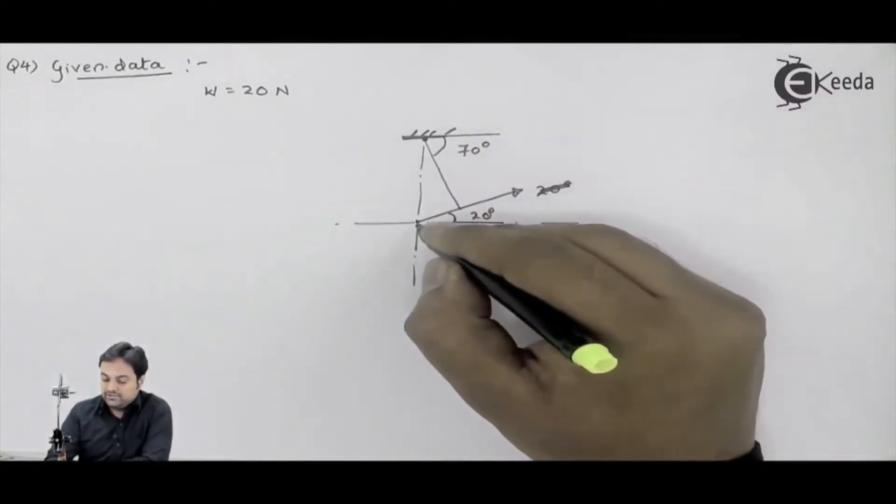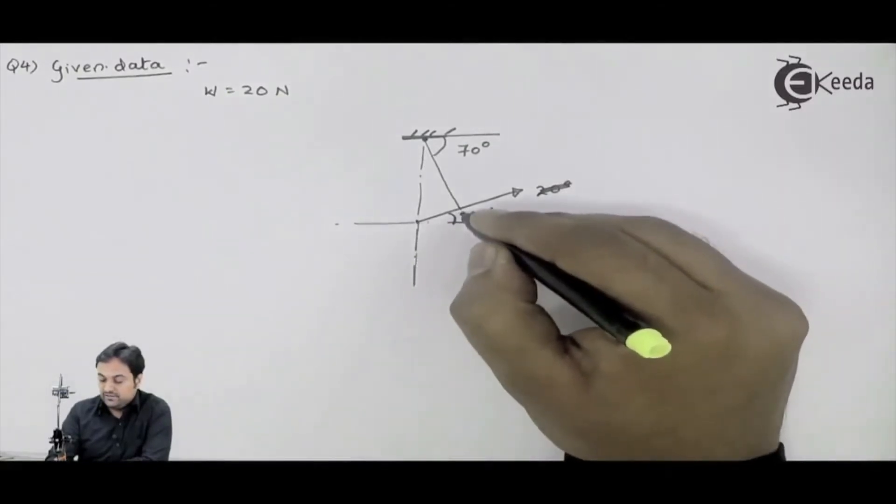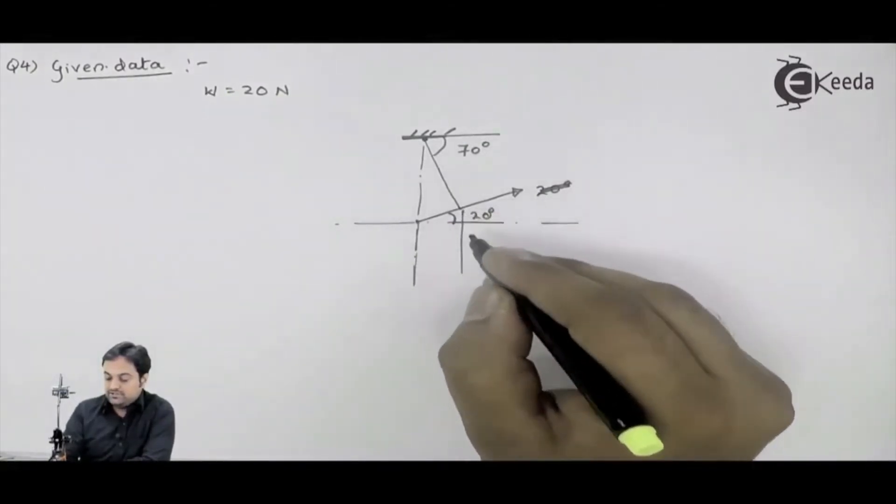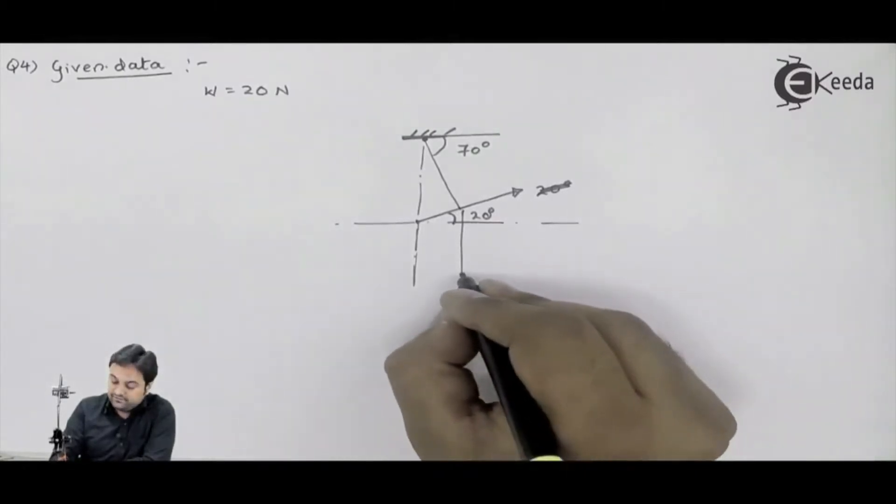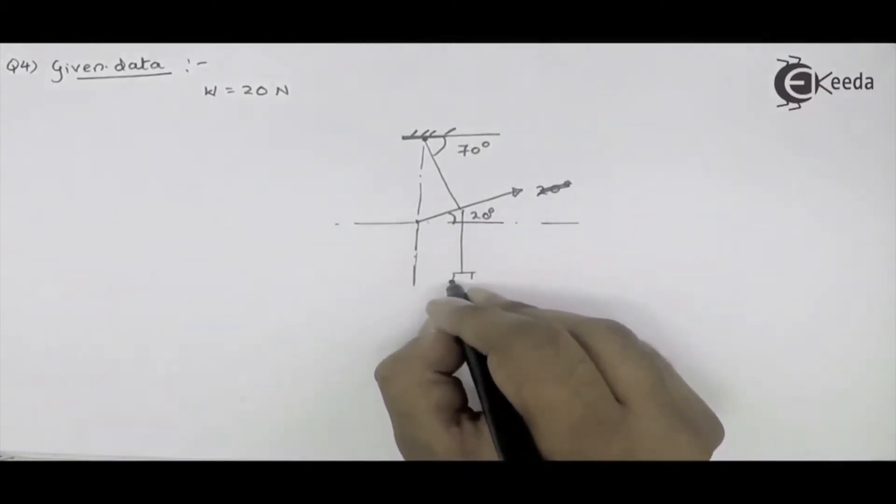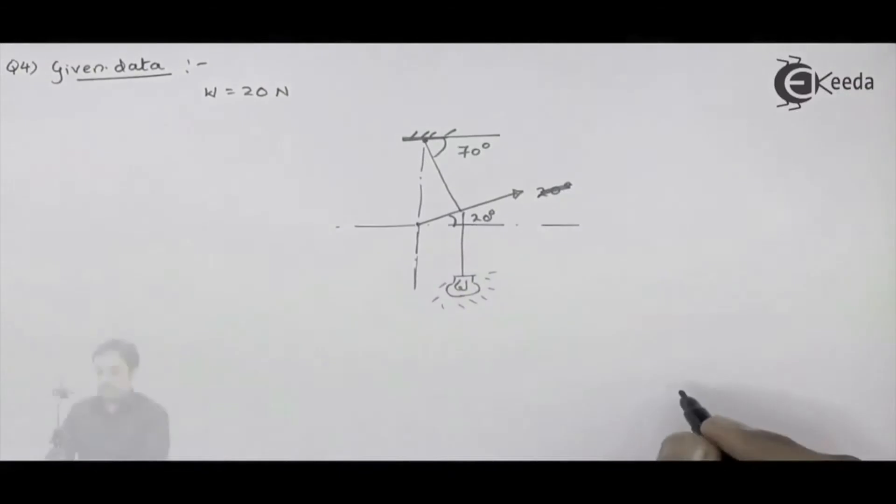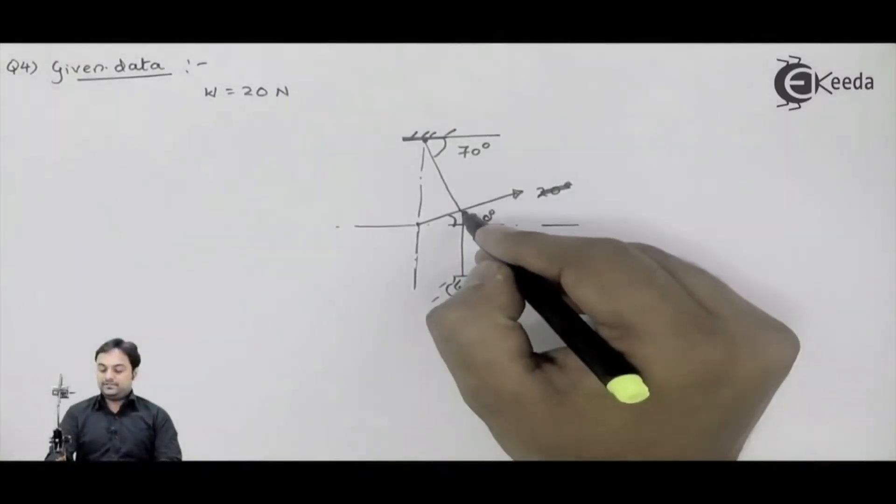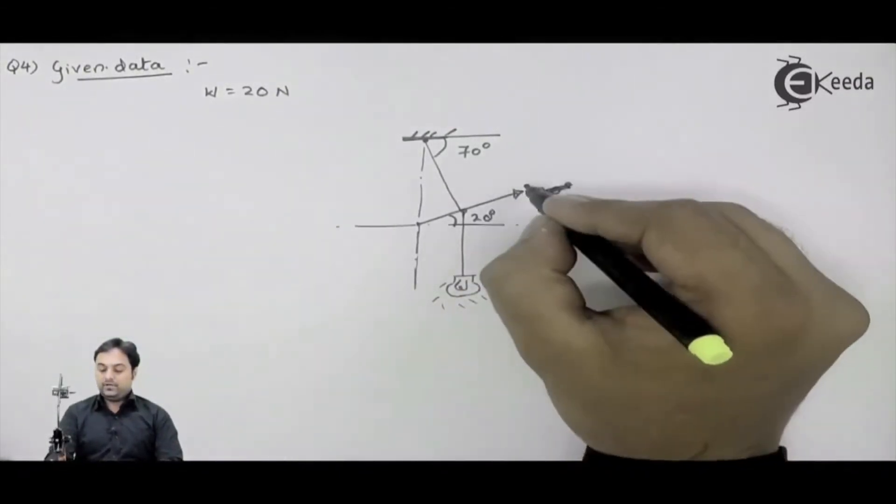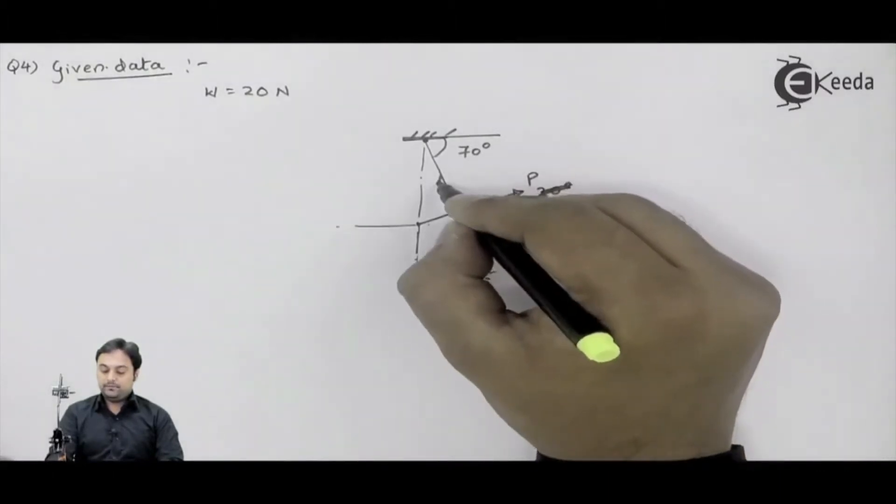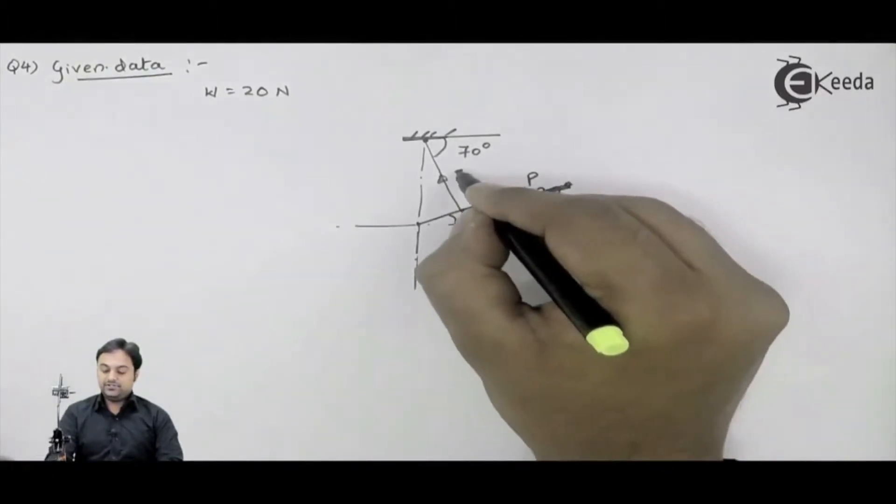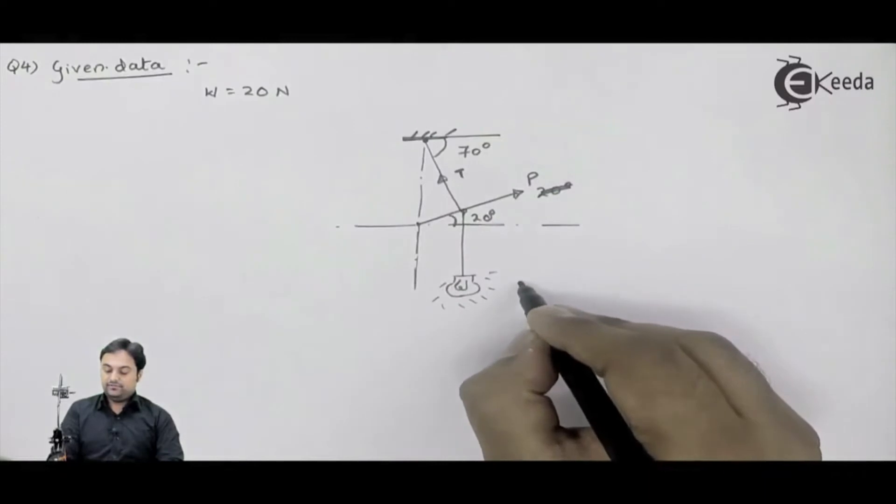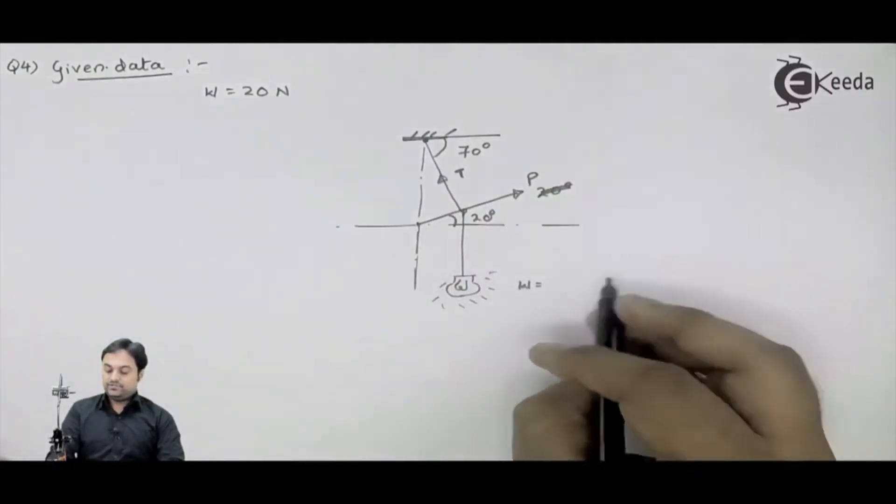Now, initially the weight was acting here. Then, if it is pulled, the weight could be shifted. Means, here if I draw the electric bulb, it will look something like this diagram, where I am applying force P. Because of that there will be tension in the string, and here is the weight of the bulb which is given as 20.